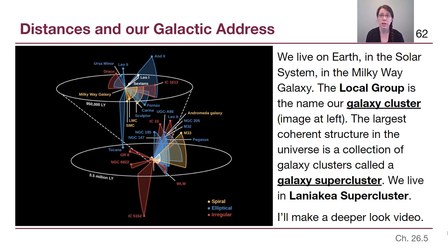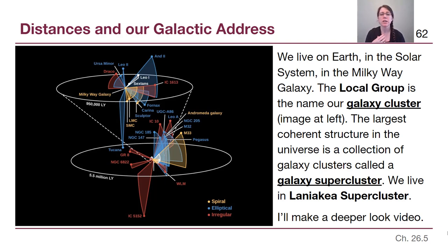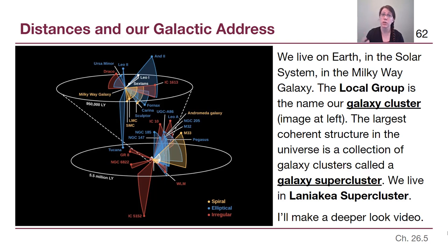If we were writing a letter to someone on the other side of the universe, we'd need to give them our full address. The Local Group — shown in a complete diagram here — is our local galaxy cluster. It doesn't have an exciting name, but there are other galaxy clusters like the Virgo cluster that we are not part of. The largest coherent structure, as the universe expands, is a galaxy supercluster — several galaxy clusters gravitationally bound together. We live in the Laniakea supercluster.